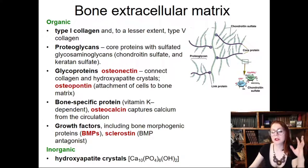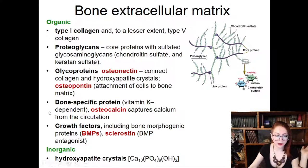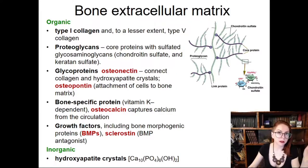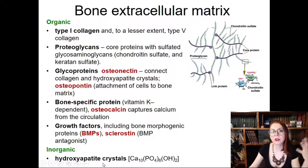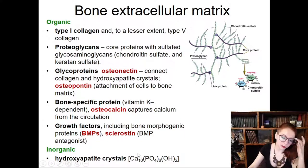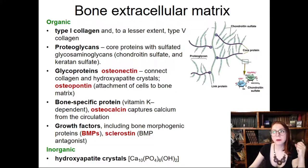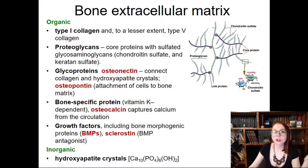So why are bones so stiff? Because they contain not only organic components, as all connective tissues do, but also inorganic components — and inorganic minerals prevail. Up to 65% of all extracellular material is represented by hydroxyapatite of calcium. So 65% of our bones are made up of calcium and phosphate salts, and that's why they are so stiff. But if bones were made up of only inorganic components, they would be fragile and very easy to break.